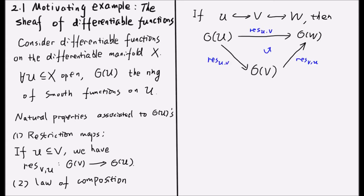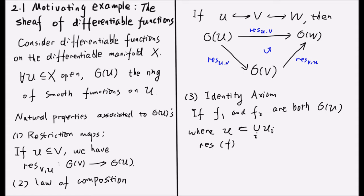And third, it should satisfy an identity axiom. If f1 and f2 are both in the ring of U, where U is a union of open subsets U_i, and furthermore, the restriction of f1 from U to U_i is equal to the restriction of f2 from U to U_i